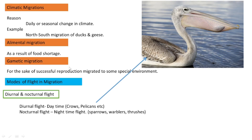Climatic migration occurs due to daily or seasonal climate change. An example is the north-south migration of ducks and geese. Elemental migration occurs because of a shortage of food. Gametic migration takes place for the purpose of successful reproduction — birds migrate to a suitable place for breeding.